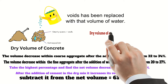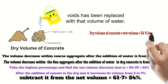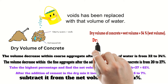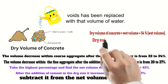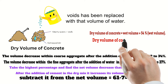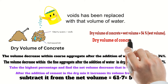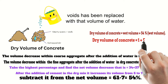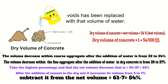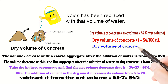The dry volume of concrete is equal to the wet volume plus 54 percent of the wet volume. For example, if the wet volume calculated from the structure is 1 cubic meter, the dry volume of concrete required will be 1 plus 54 percent of 1, which equals 1.54 cubic meters.